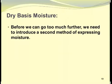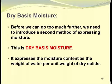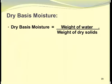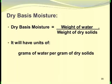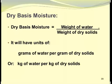Before we go further, we need to introduce a second method of expressing moisture: the dry basis moisture. It expresses moisture content as the weight of water per unit weight of dry solids. The dry basis moisture is defined as the weight of water divided by the weight of dry solids, with units of kilograms of water per kilogram of dry solids — or equivalently, grams of water per gram of dry solids, or pounds per pound, as long as units are dimensionally consistent.